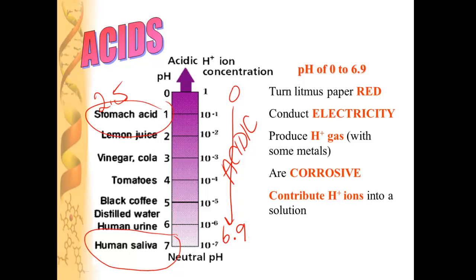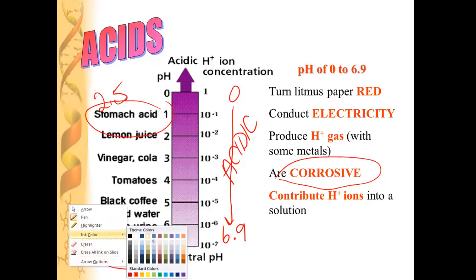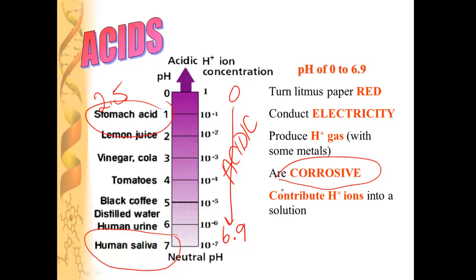Acids turn litmus paper red. They conduct electricity. If you drop an acid on some metal, like some magnesium metal, it will make hydrogen gas. Acids are corrosive. They'll burn your skin.